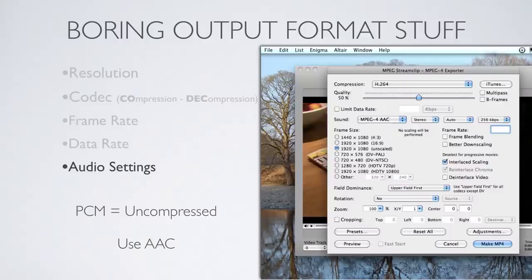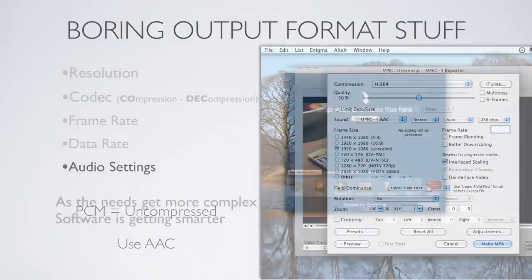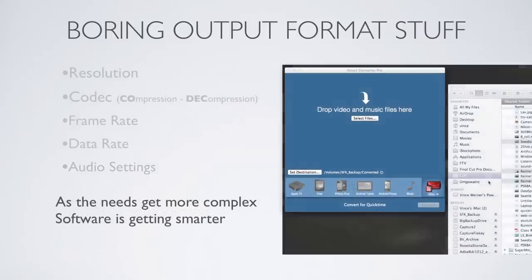For audio settings, use AAC, which is a compression type also known as a lossless compression — it doesn't lose much data, sounds quite good, and keeps the audio file small. PCM is uncompressed and unnecessarily large, but that's master quality, comparable to a compact disc.